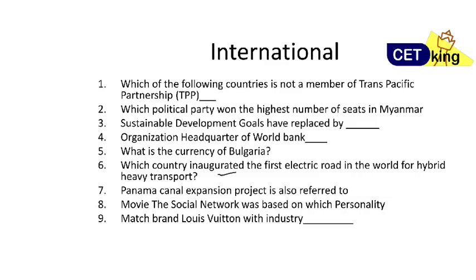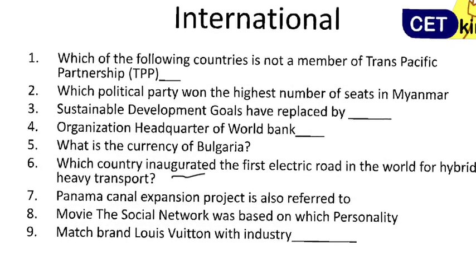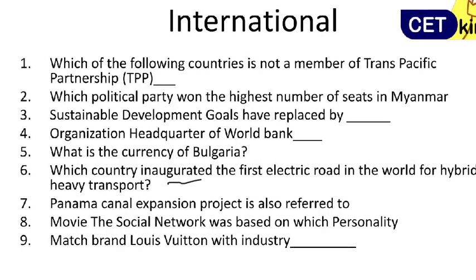The most important category is international, since it's an international college — maximum questions were based on international affairs. For example: which country is not a member of the Trans-Pacific Partnership (TPP), which political party won the maximum number of seats in Myanmar elections, headquarters of the World Bank, and currency of Bulgaria. This was mostly the difficult part of the section.